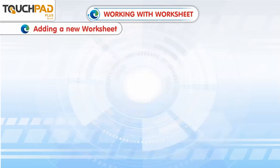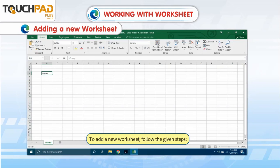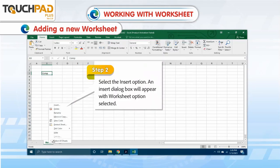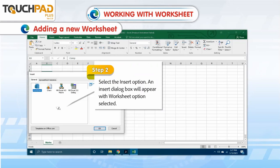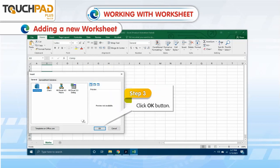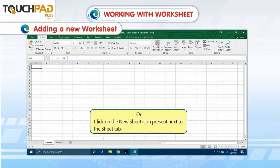Adding a New Worksheet. To add a new worksheet, follow the given steps. Step 1: Right-click on the Sheet tab. A pop-up menu appears. Step 2: Select the Insert option. An Insert dialog box will open with the Worksheet option selected. Step 3: Click the OK button. Or, click on the New Sheet icon present next to the Sheet tab.